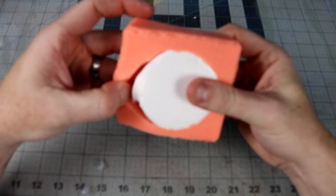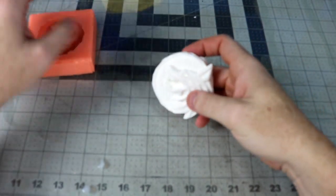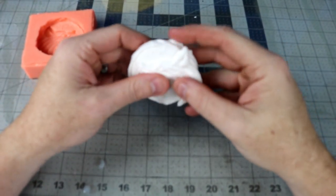Smooth Cast 300 sets up really fast, literally in about 10 minutes it's ready to pull out of the mold and is rock hard.